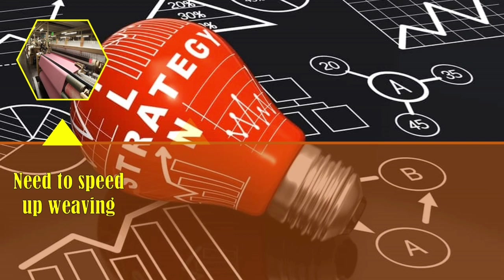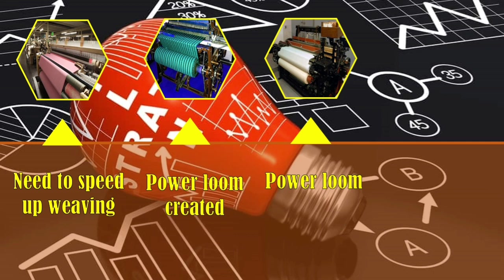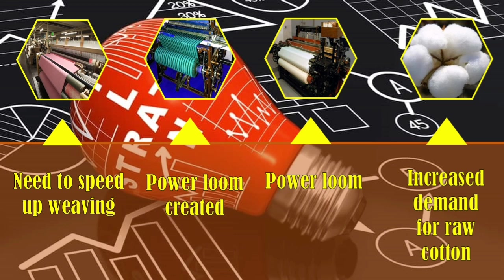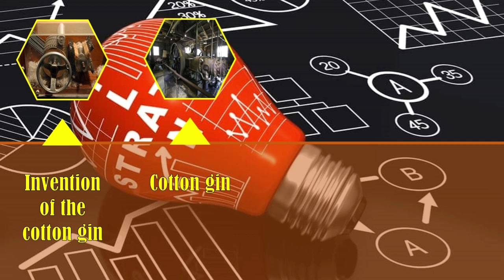Another invention is the power loom, also created during the time of the industrial revolution. The power loom was designed to weave threads into cloth, designed by Edmund Cartwright in 1784. This power loom increased demand for raw cotton, which resulted in the invention of the cotton gin — a short word for cotton engine.